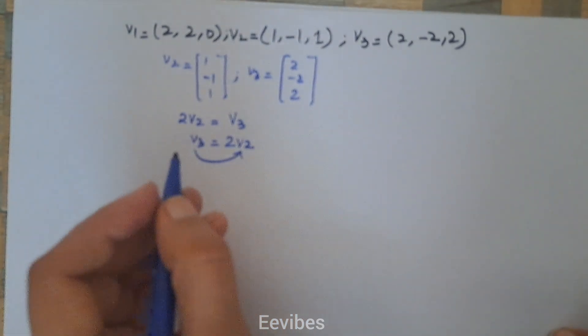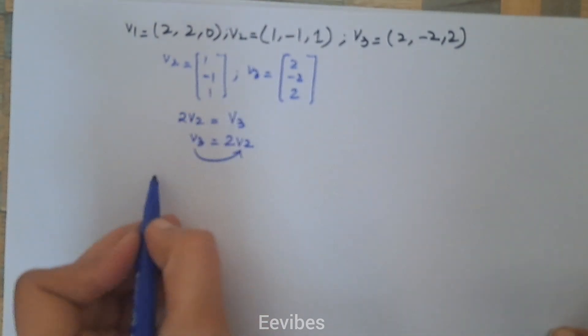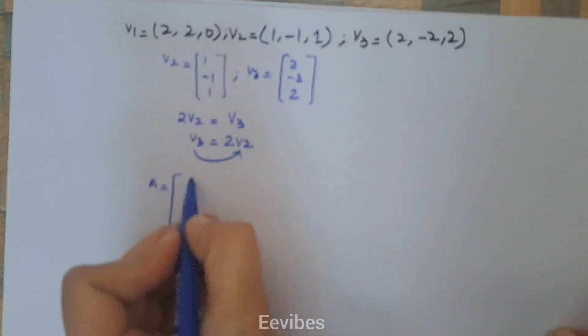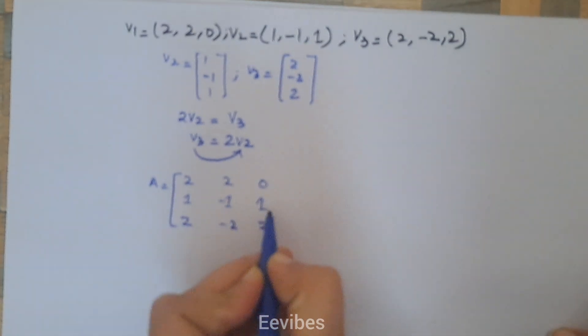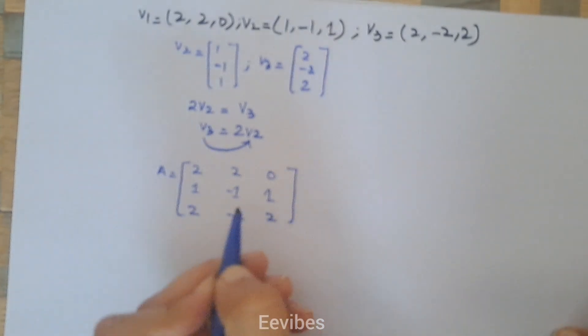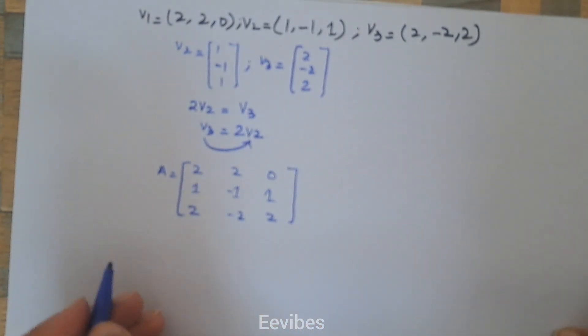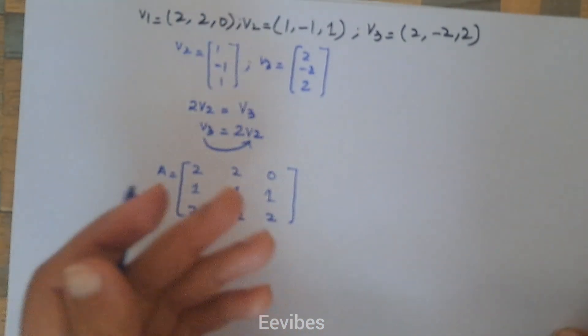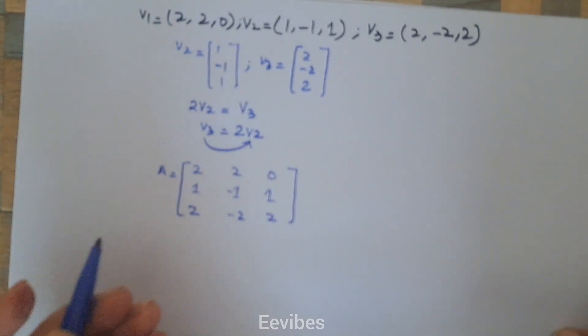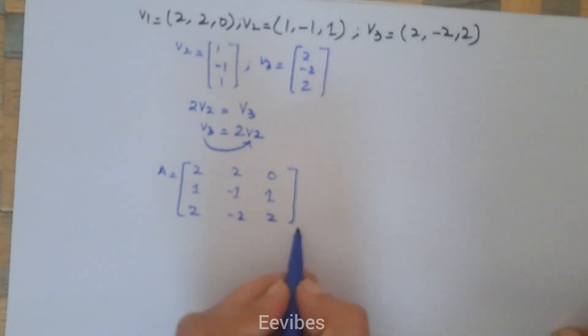Another quick way: if you have vectors, write them in the form of a matrix. Let's do it now: [2, 2, 0; 1, -1, 1; 2, -2, 2]. It's okay if you write either column-wise or row-wise, it doesn't matter. I've written these vectors row-wise so the result won't change. If you get a square matrix, like we have here—a 3 by 3 matrix—find the determinant.